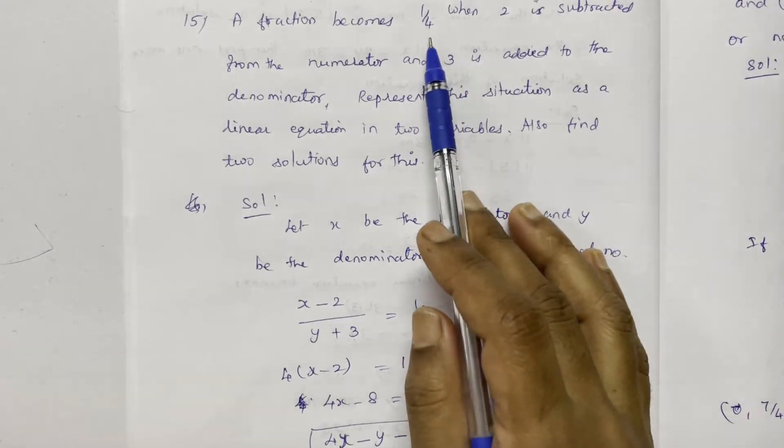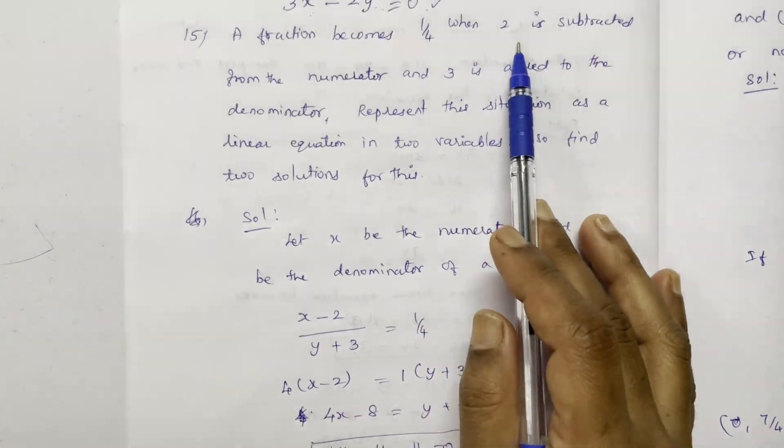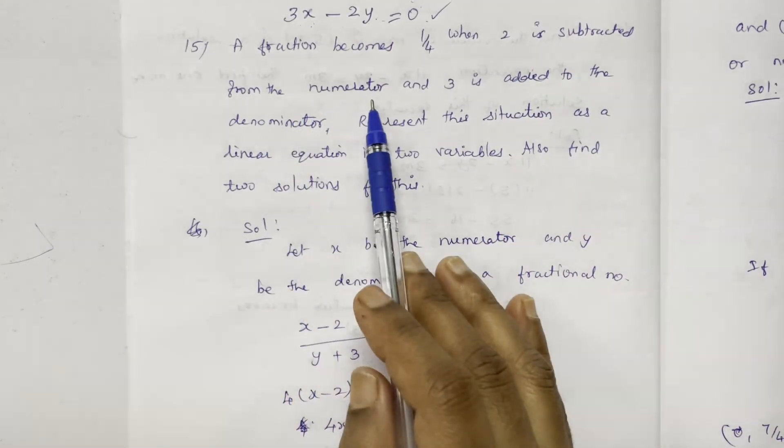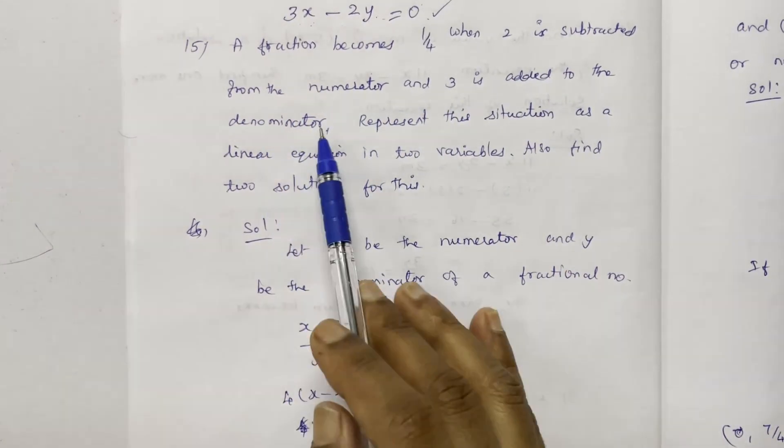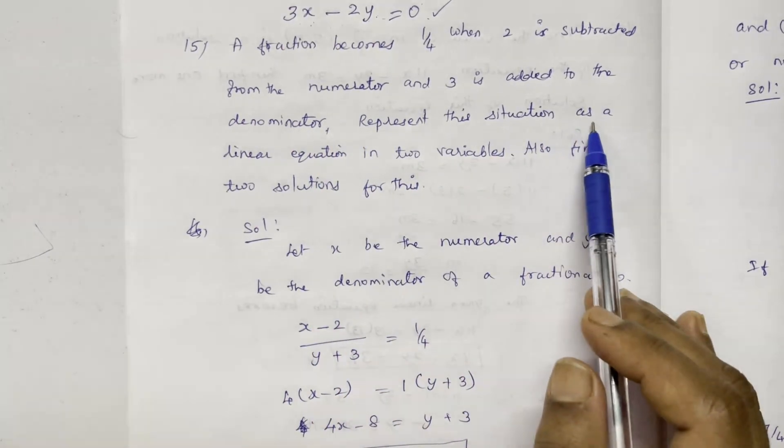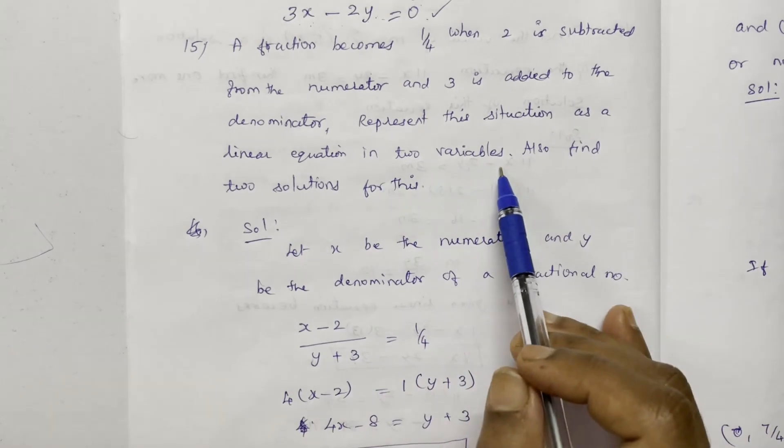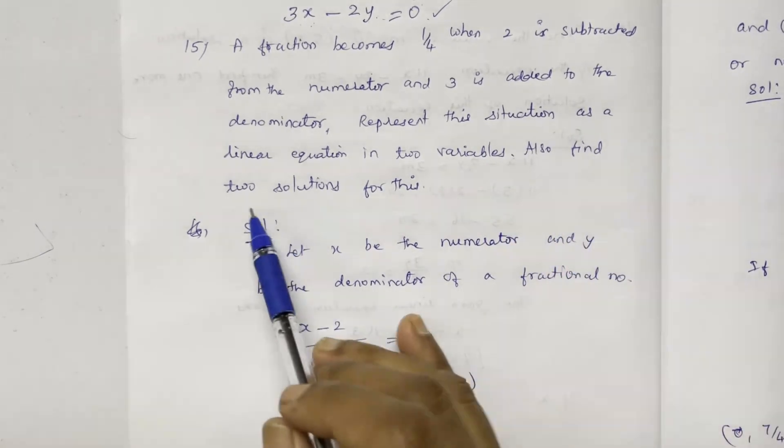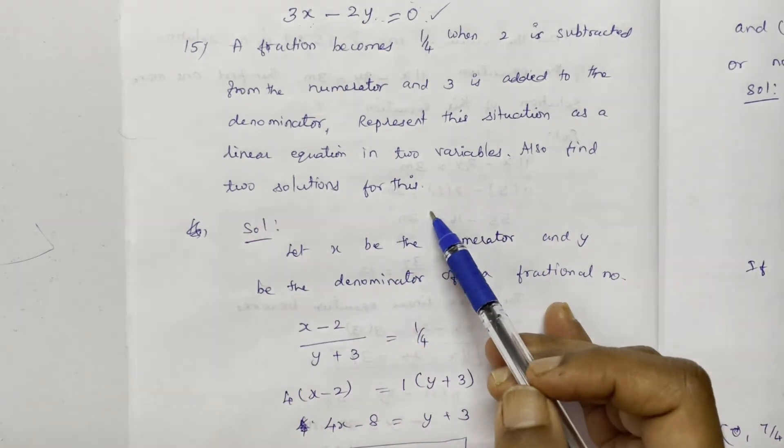A fraction becomes 1 by 4 when 2 is subtracted from the numerator and 3 is added to the denominator. Represent this situation as a linear equation in two variables. Also find two solutions for this.